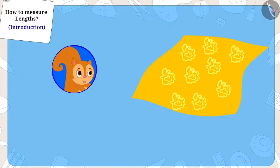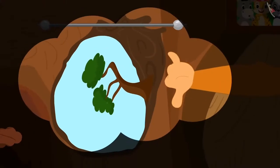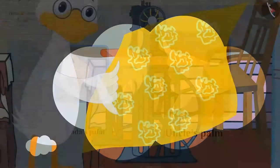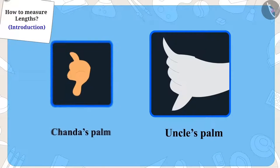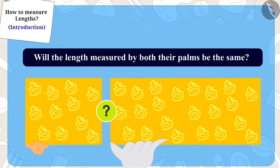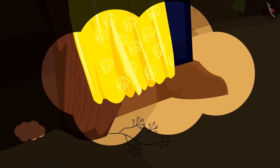Yes, you are right. Chanda measured the window using her palms, and while giving the cloth, uncle had measured the cloth using his palms. Now Chanda's palms are so small and uncle's palms are so big. So, will the length measured by both their palms be the same? No, that is why Chanda's window curtain reached the floor.